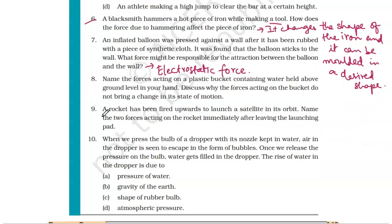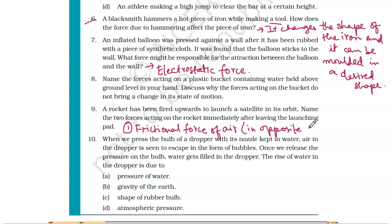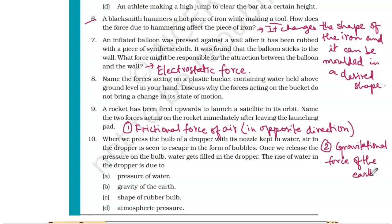Question number nine: a rocket has been fired upward to launch a satellite. Name the two forces acting on the rocket immediately after leaving the launching pad. The two forces are: frictional force of air acting opposite to the direction of motion, and gravitational force of the Earth acting downward.